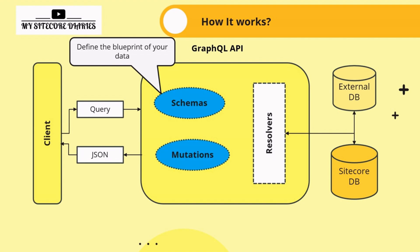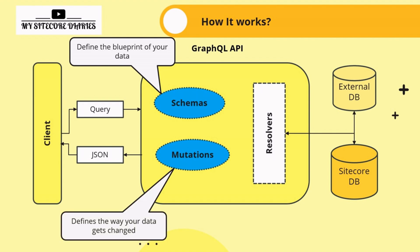In addition to querying data, the client can also modify data through what we call mutations. Mutations define the way your data gets changed — such as creating, updating, or deleting records. Then there is a very important component in GraphQL: the resolver. The core logic for fetching or mutating data is handled by the resolver.